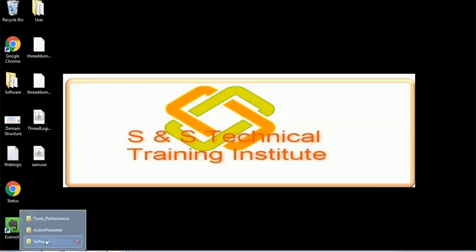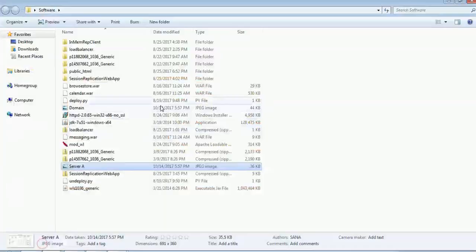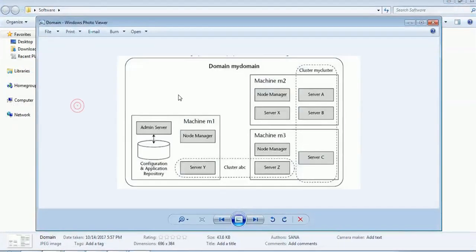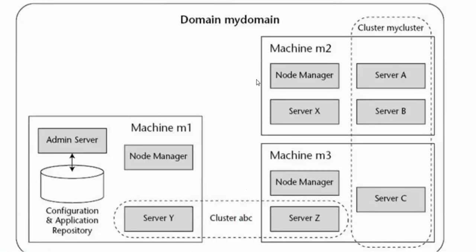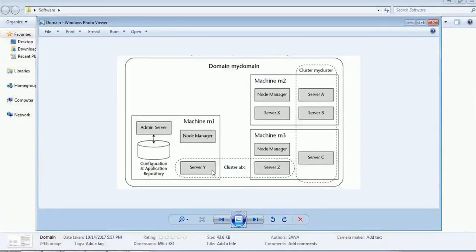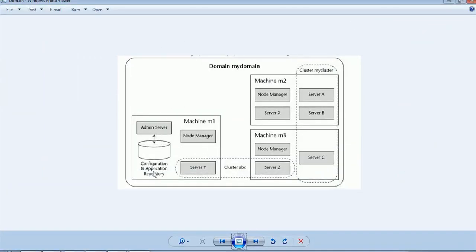To give an overview first, let's talk about the different components in a domain. Whenever you create a domain, you will have one admin server, and a configuration file will be stored along with that. This configuration file is your config.xml file, in which all the configuration for your domain will be available.